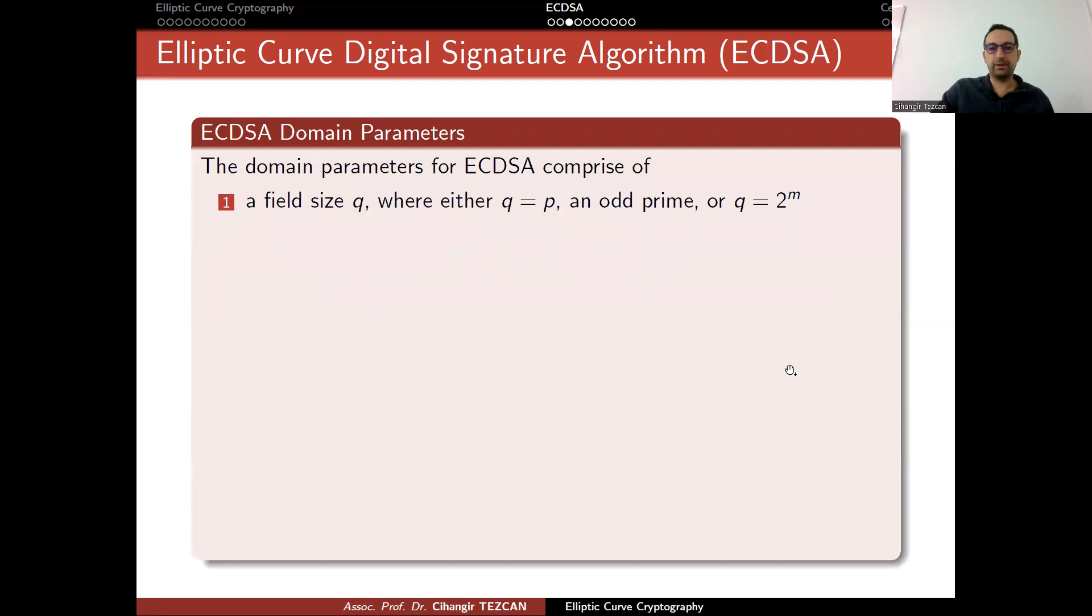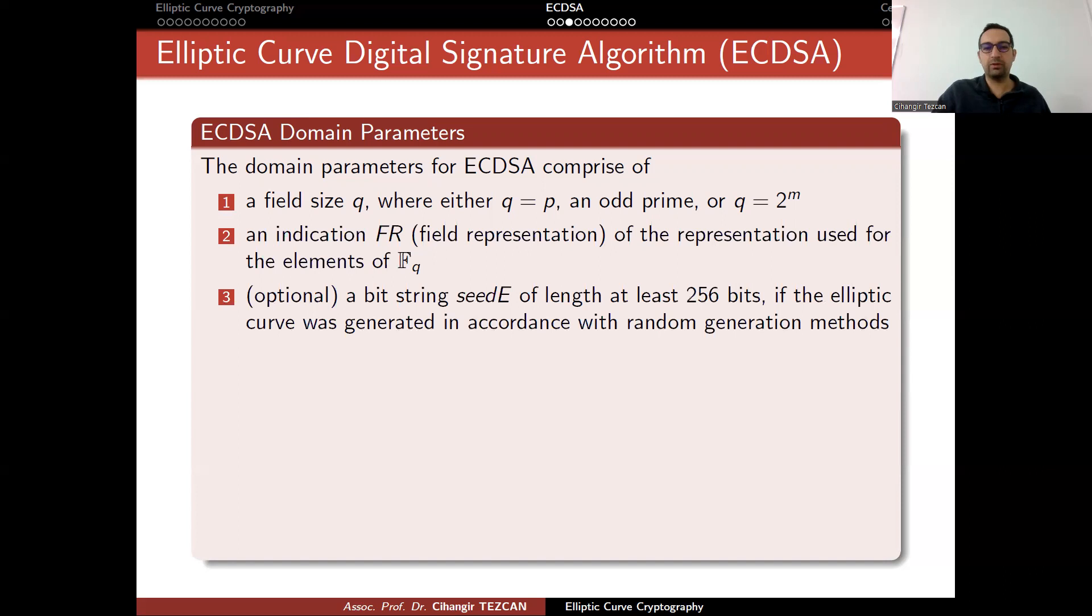The domain parameters for elliptic curve digital signature algorithm comprise of a field size Q where either Q equals to a prime P or Q equals to 2 to the N. An indication of the field representation of the representation used for the elements of Q, because you can actually represent these elements in different ways, like maybe you can use prime coordinates, polar coordinates, and so on.